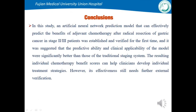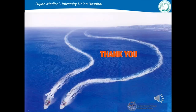The conclusion: an ANN prediction model that can effectively predict the benefits of adjuvant chemotherapy after radical resection of gastric cancer in stage 2 and 3 patients was established and verified for the first time. The predictive ability and clinical applicability of the model were significantly better than the traditional staging system. The individual chemotherapy benefit predictions can help clinicians develop individualized treatment strategies. However, effectiveness still needs further external verification. Thank you for your attention.